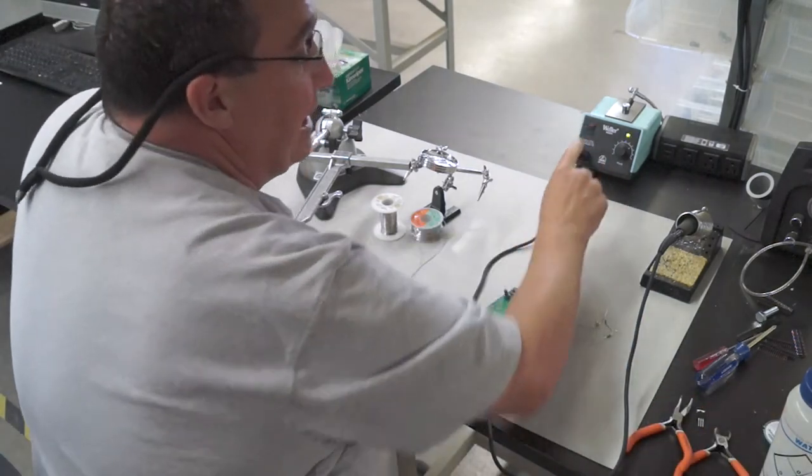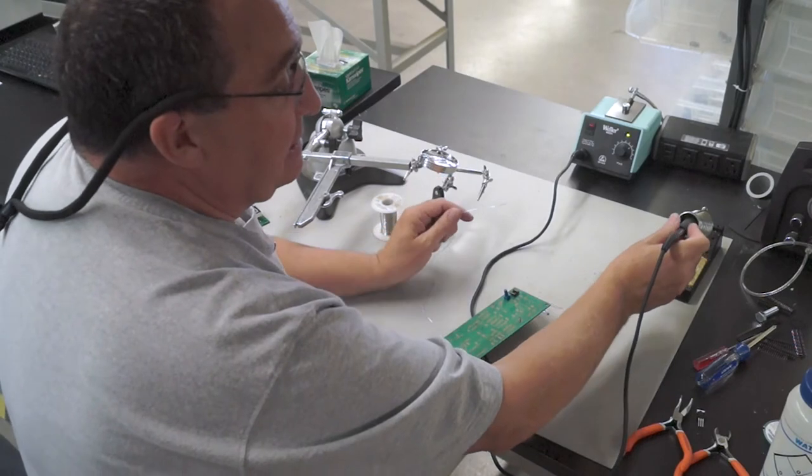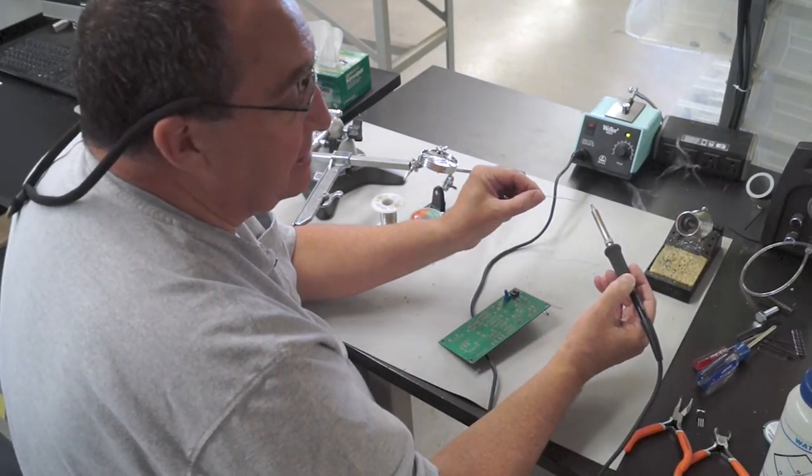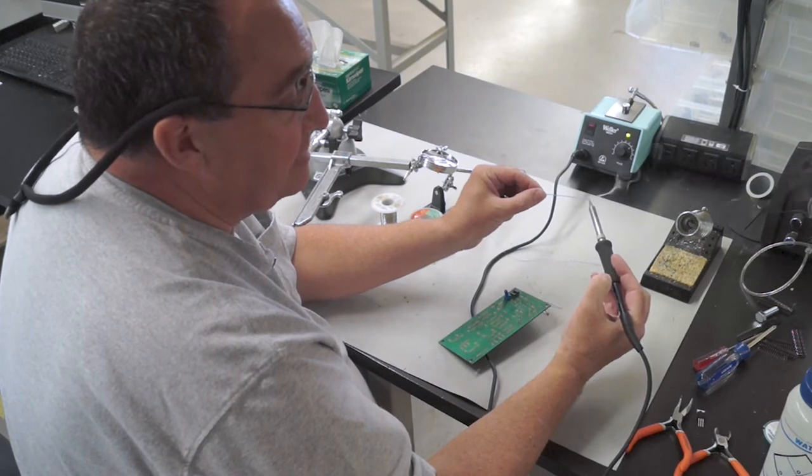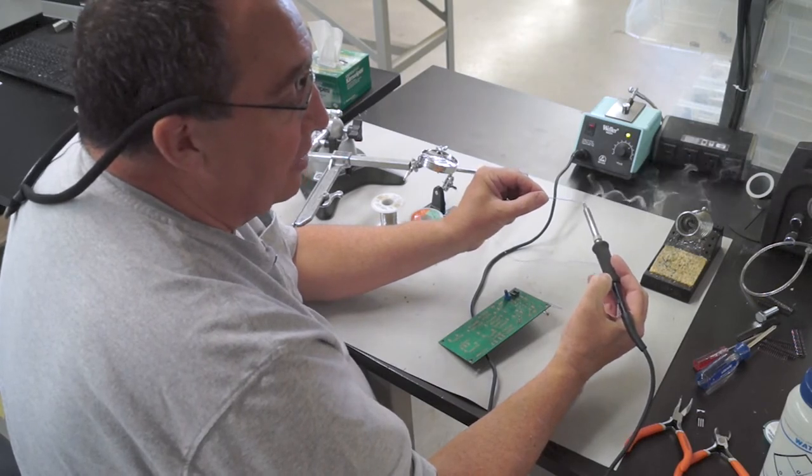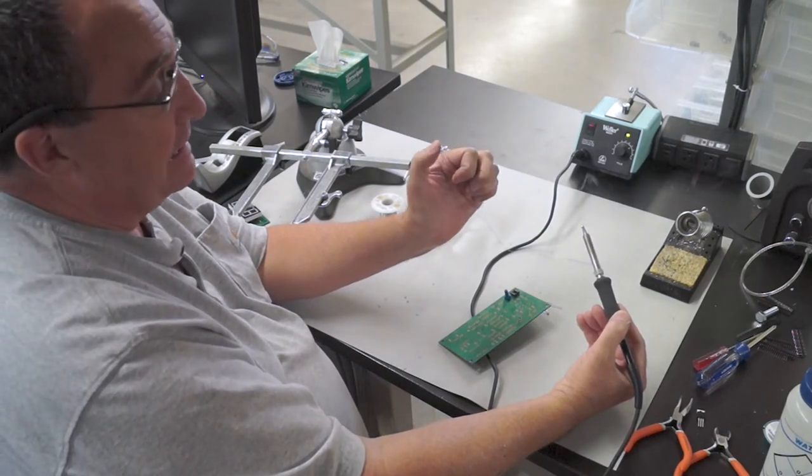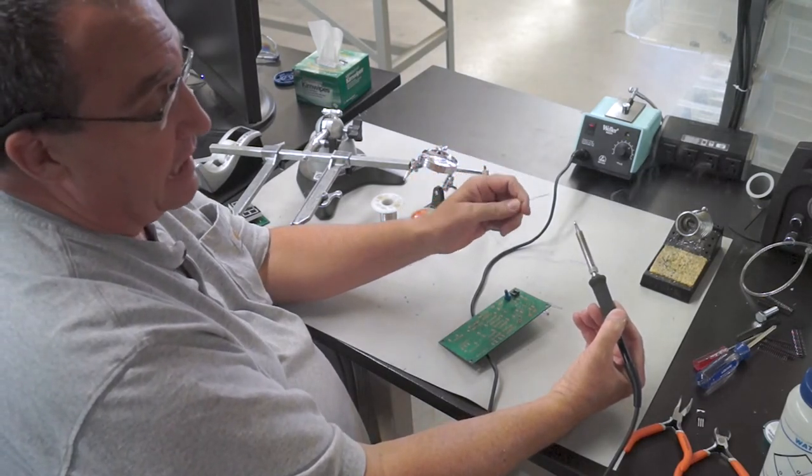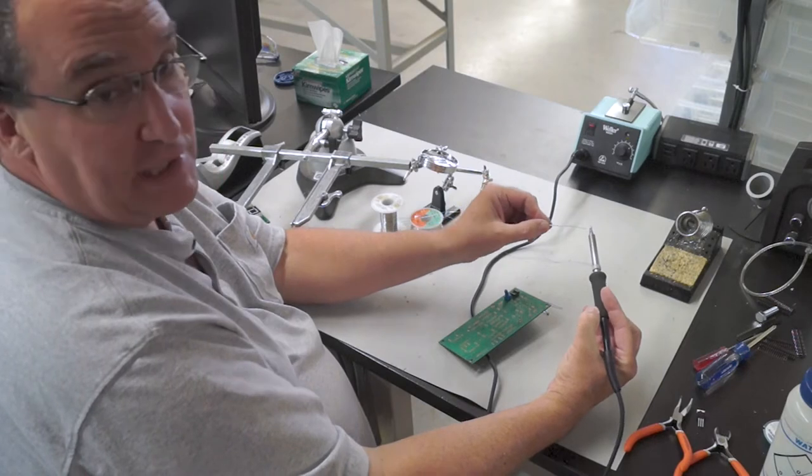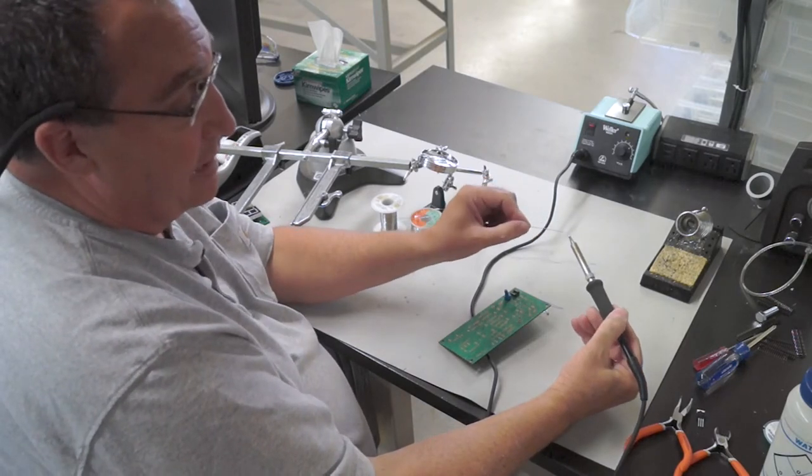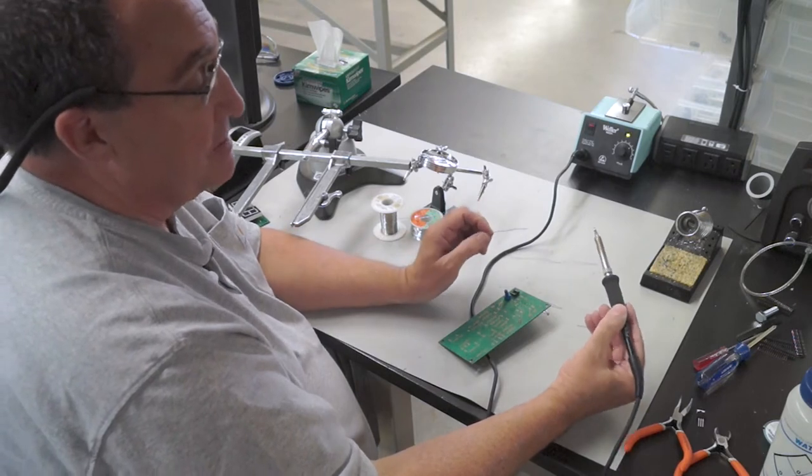Prepare your iron by turning the iron on. I always like to make sure that there's always solder applied onto the tip. You'll notice that the tip is smoking a little bit. What that is, is the actual flux material that's inside the center of the solder. That's again used to clean the tip and to clean the copper on the PC board for better adhesion of the solder.